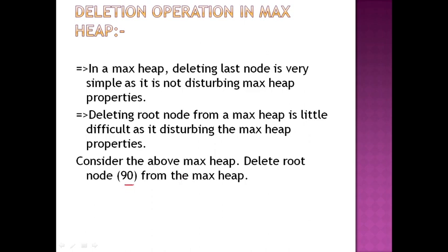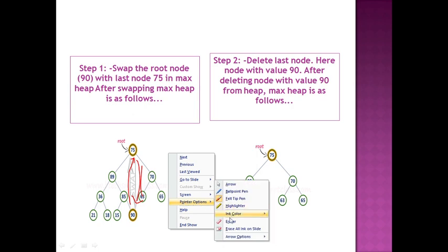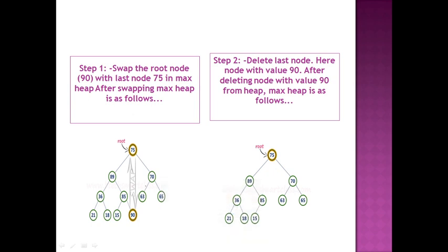We will consider deleting root node 90. The first step is: before deleting the root, we swap the root node with the last leaf node from the left-to-right ordering. The last node in the tree is 75 and the root is 90. We swap these two nodes — 90 goes to the leaf position and 75 goes to the root.